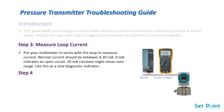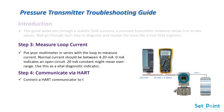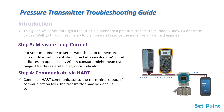Step 4: Communicate via HART. Connect a HART communicator to the transmitter's loop. If communication fails, the transmitter may be dead. If successful, check configuration settings: range, damping, and PV.